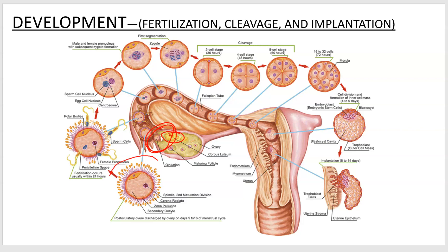This structure right here represents that ovulated secondary oocyte. There are a couple of features around the outside. There are these spiky-looking things called the corona radiata — you don't have to know that — but you do have to know the zona pellucida, which is this little orange line around it. That's one of the barriers that keeps sperm cells out. They have to get through it, basically melted by the acrosome, which is that enzymatic head on the sperm cells.